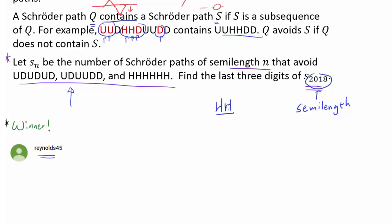And also we have to remember that Hs come in pairs. Now having made those basic statements, I'm now going to make a claim that the desired Schröder paths that avoid all of them can contain either 0 HHs, 1 HH, or 2 HHs, and no more.